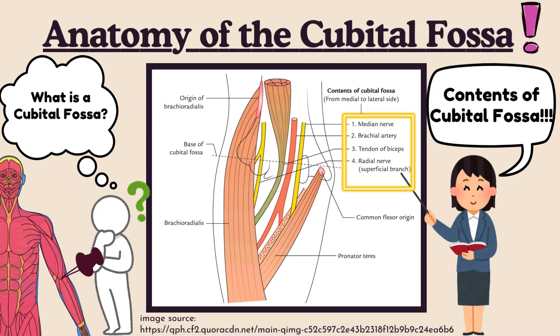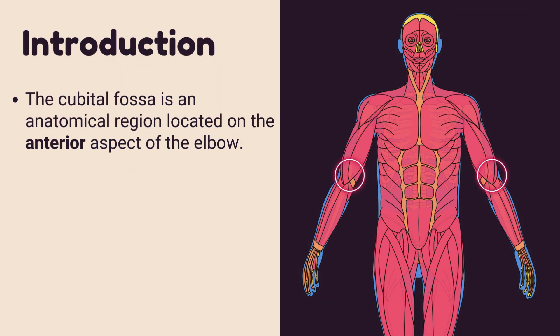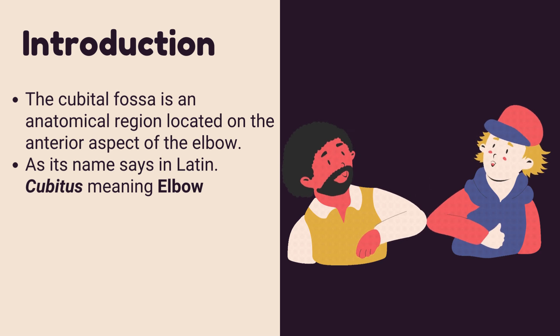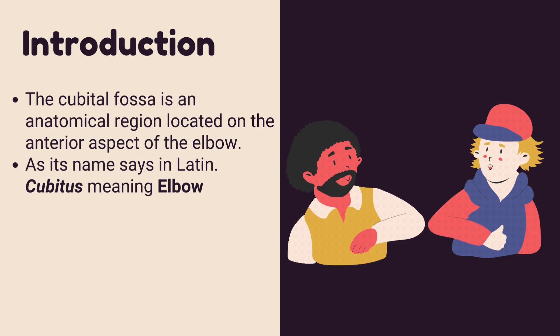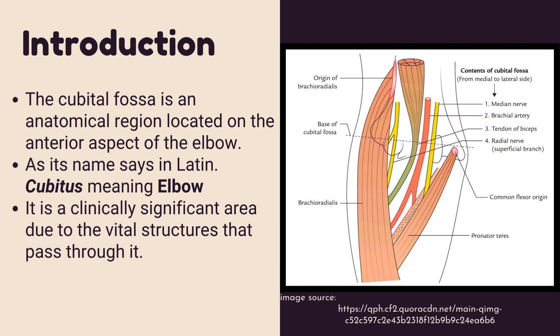In this video, we will talk about an important part of the elbow. It is called the cubital fossa. The cubital fossa is an anatomical region located on the anterior aspect of the elbow, as its name says in Latin — cubitis, meaning elbow. It is a clinically significant area due to the vital structures that pass through it.